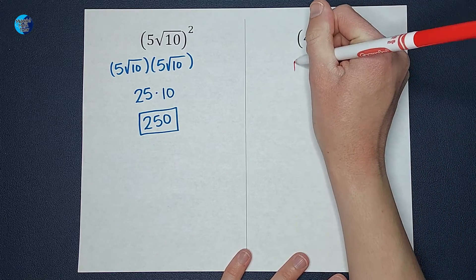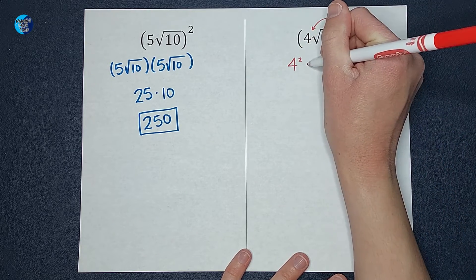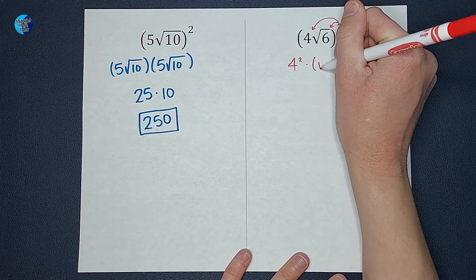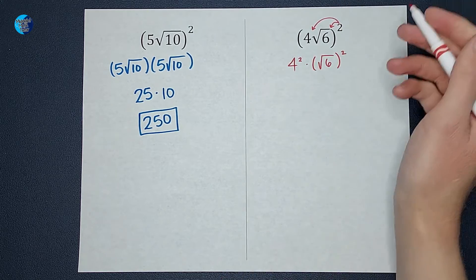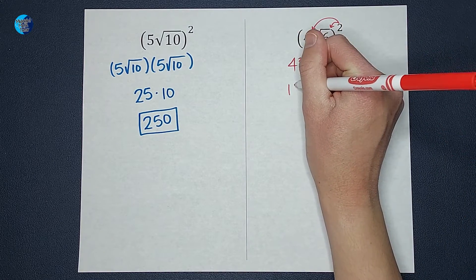So then I end up with 4² times (√6)². So 4² is 4 times 4, which gives me 16.